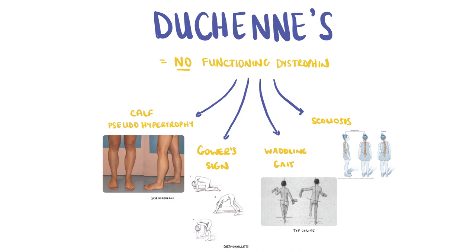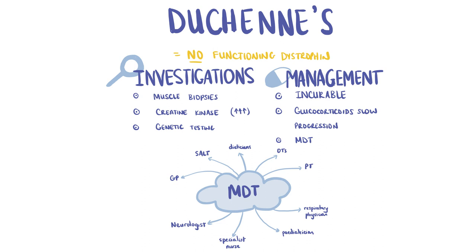Proximal limb girdle weakness, exhibited by Gower's sign, where the patient uses their arms to help stand up from sitting due to weakness of the hip muscles. A waddling gait and scoliosis. Muscle biopsies aid the diagnosis of Duchenne's. Other useful investigations include CK levels, which are high in Duchenne's, and genetic testing.